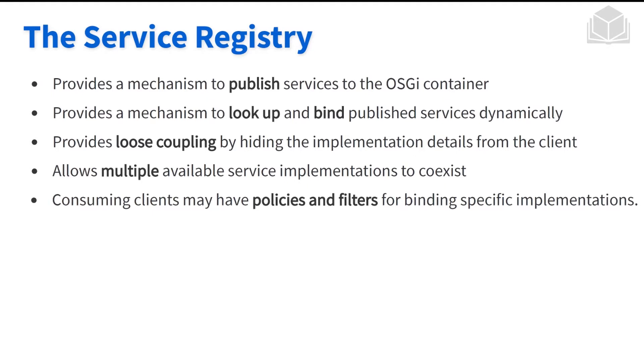The service registry allows us to have multiple components or multiple versions of a component floating around. The OSGi framework and service registry can handle multiple versions of a component. We can also use specific policies and filters to hone in or pick specific components. For example, if we have three versions, we can use policies or filters to say I want version one, version two, or version three.